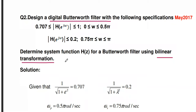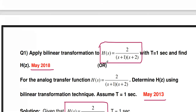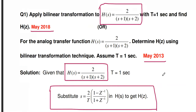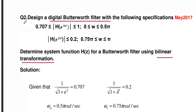Already one bilinear transformation problem was solved where H(s) is directly given — that is a university question from May 2018 and May 2013. I posted it in a previous video; I will give the link in the description box so you can refer to it. Now we are going to see the new problem.